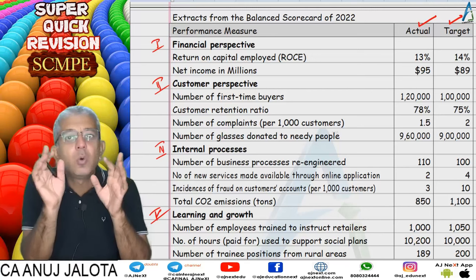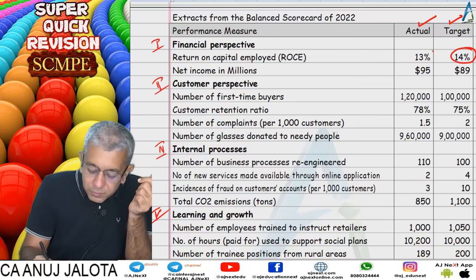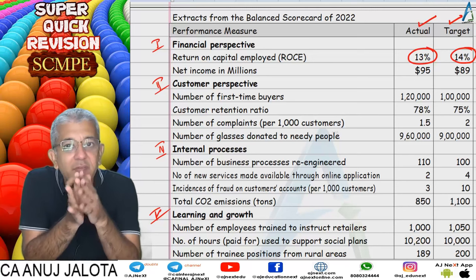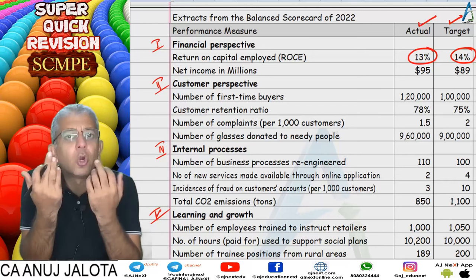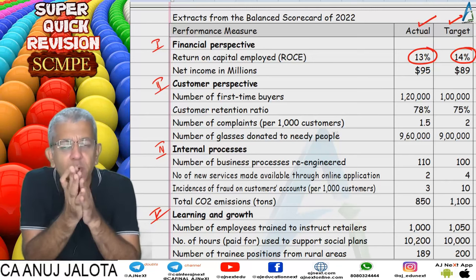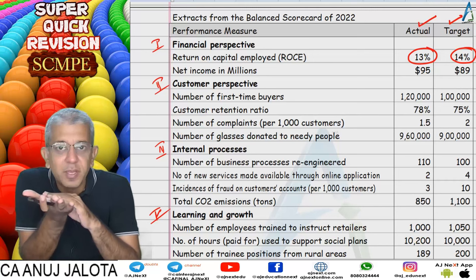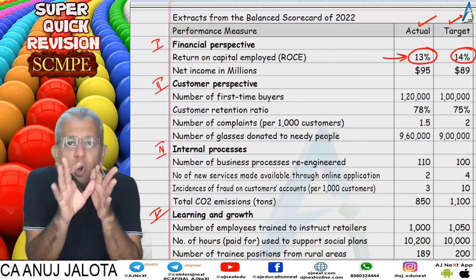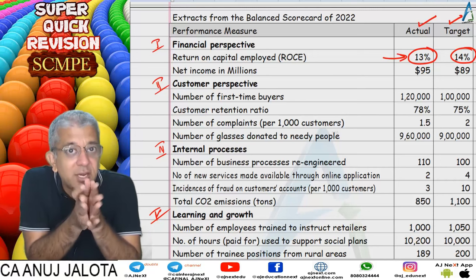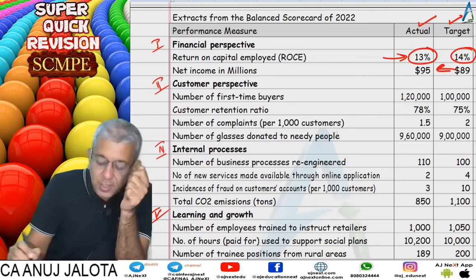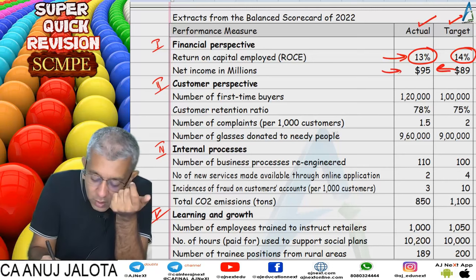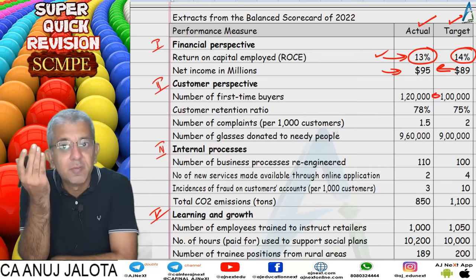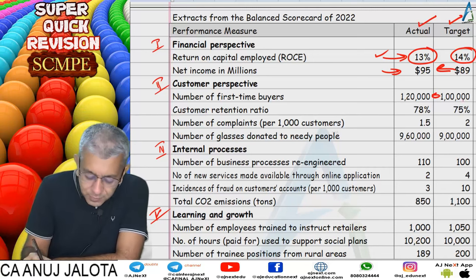For ROCE: target was 14% but achieved only 13%. That might seem bad, but the question notes the company invested heavily in IT infrastructure since a lot of sales come online — for security and better user experience. When investment is higher, returns are lower. So I would not heavily criticize this, as that investment will give long-run results. Net income actually increased — so in absolute terms we earned more, even if percentage-wise it's lower. Number of first-time buyers: target 1 lakh, achieved 1 lakh 20 — customers are liking the brand.